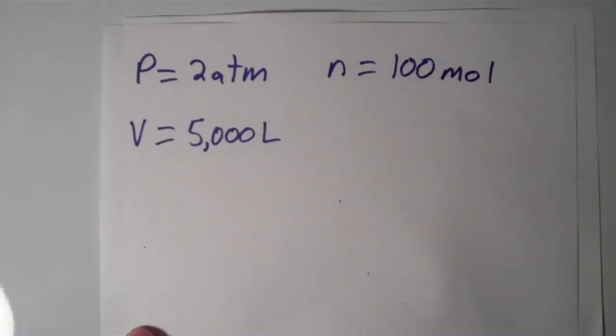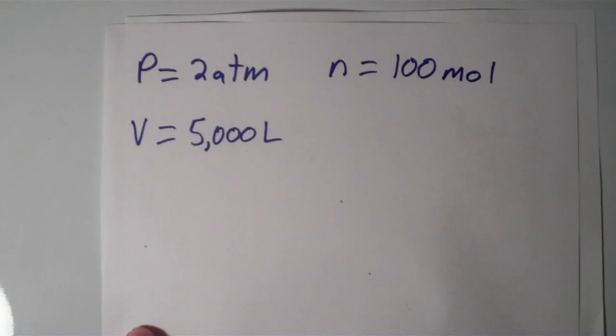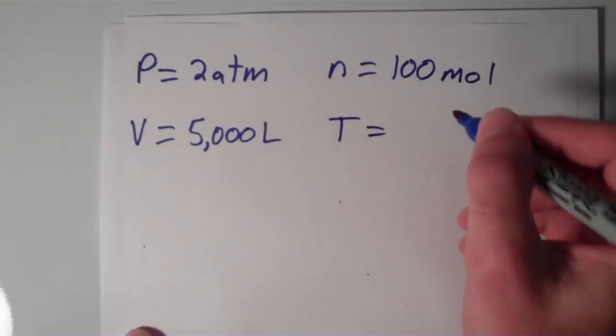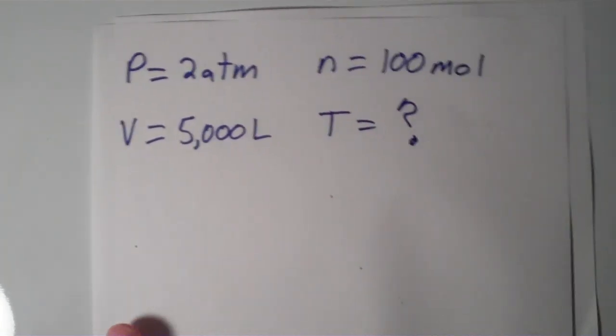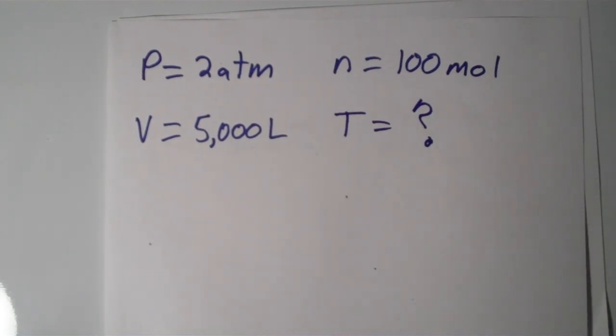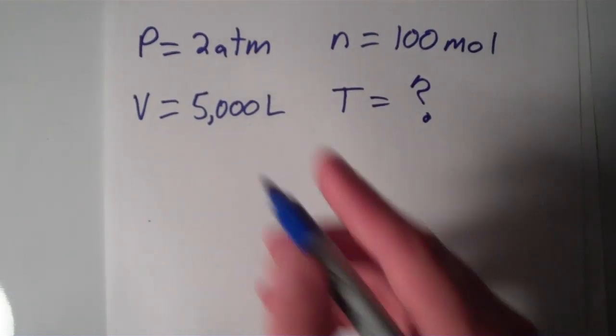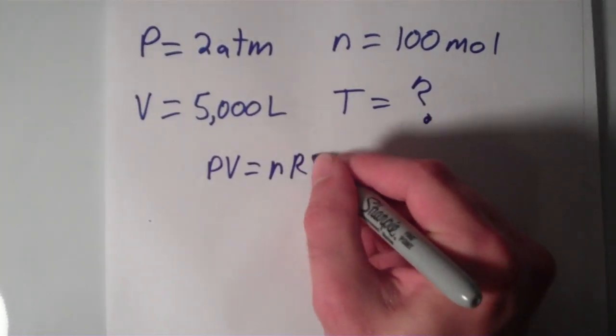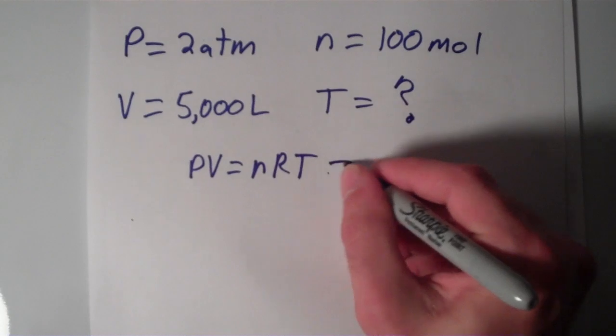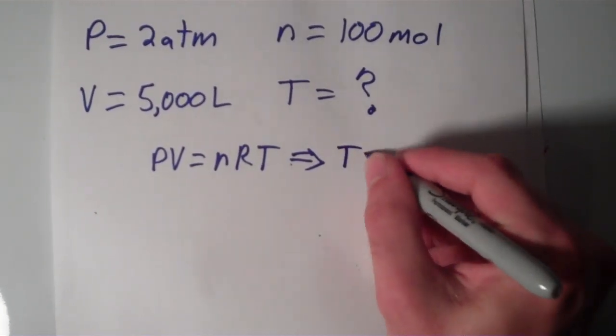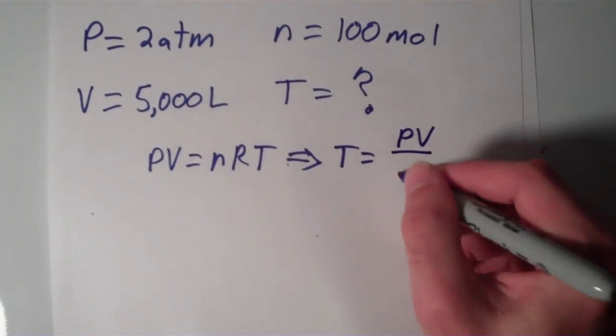If I have a pressure of 2 atmospheres, a volume of 5000 liters, and an amount of 100 moles, then what is going to be the temperature of this gas according to the ideal gas law? So, you can start with the ideal gas law equation, that's PV equals nRT. And then to get T all by itself, we have to divide both sides of this equation by nR, and we'll get that T is equal to PV over nR.